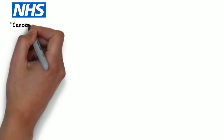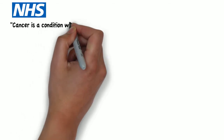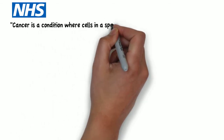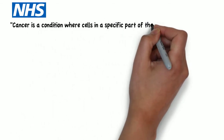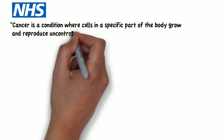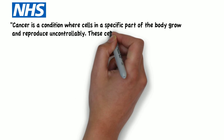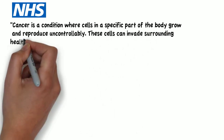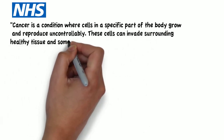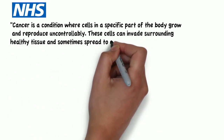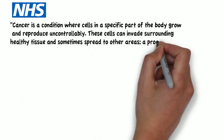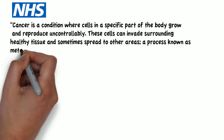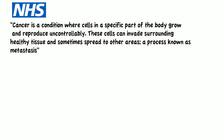As defined by the NHS, cancer is a condition where cells in a specific part of the body grow and reproduce uncontrollably. These cells can invade surrounding healthy tissue and sometimes spread to other areas, a process known as metastasis.